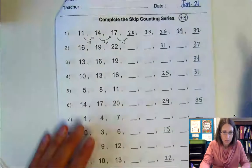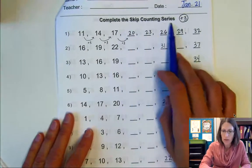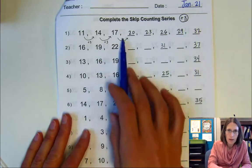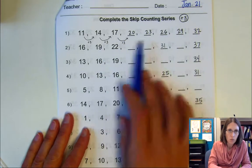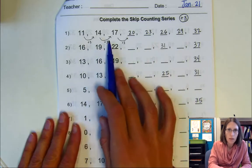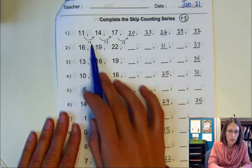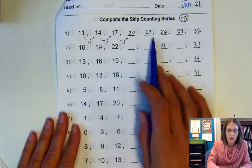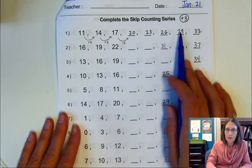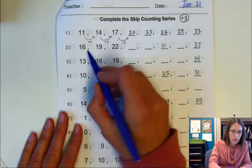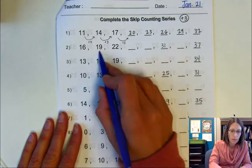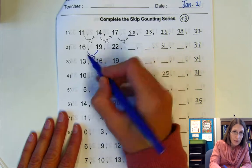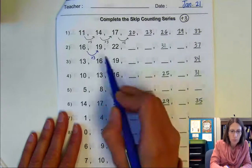You will notice it says complete the skip counting series, and we are adding three. These are regular number patterns where each time we move from the left side to the right side, we're adding three. So 11 plus three is 14, 14 plus three is 17, 17 plus three is 20. And then we can continue and complete the regular number pattern. So we know 16 plus three is 19. If you want to draw the arrows and write the rule down below, you can, but this whole page is adding three, so you might not need to do that.